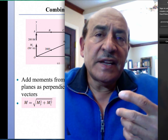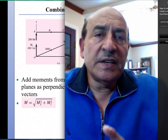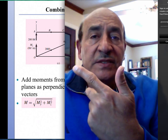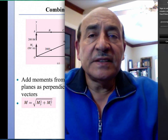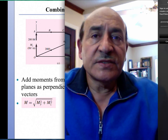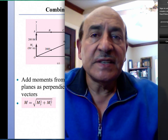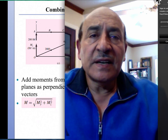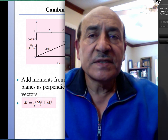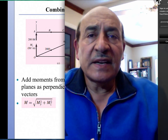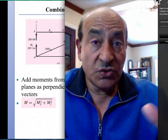We now have the complete distribution of moments along the beam — one vector My in the y-direction and another Mz in the z-direction. In the stress analysis, we will compute the stress due to My and the stress due to Mz separately. This completes the example using free body diagrams to describe moment distribution. In the next section, we will discuss a more systematic approach using singularity functions.